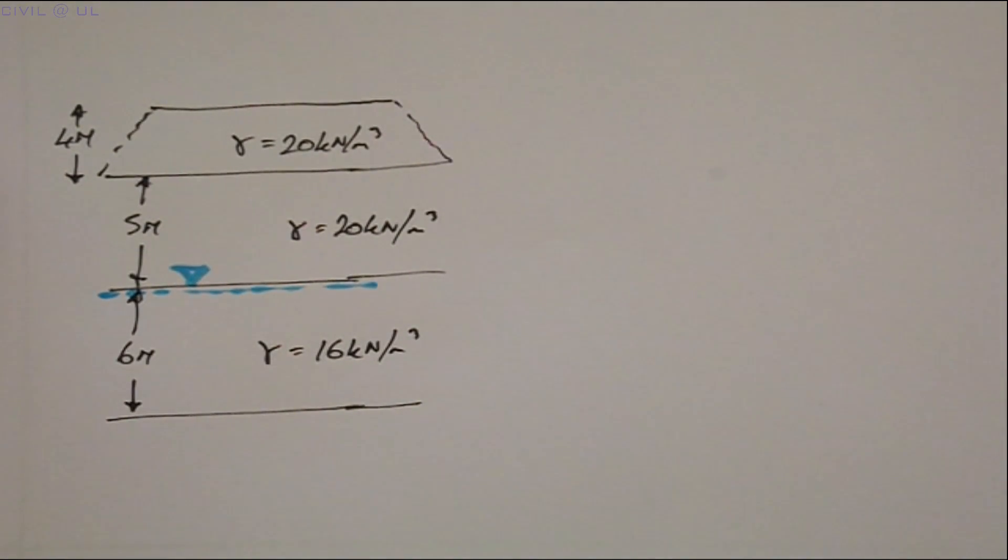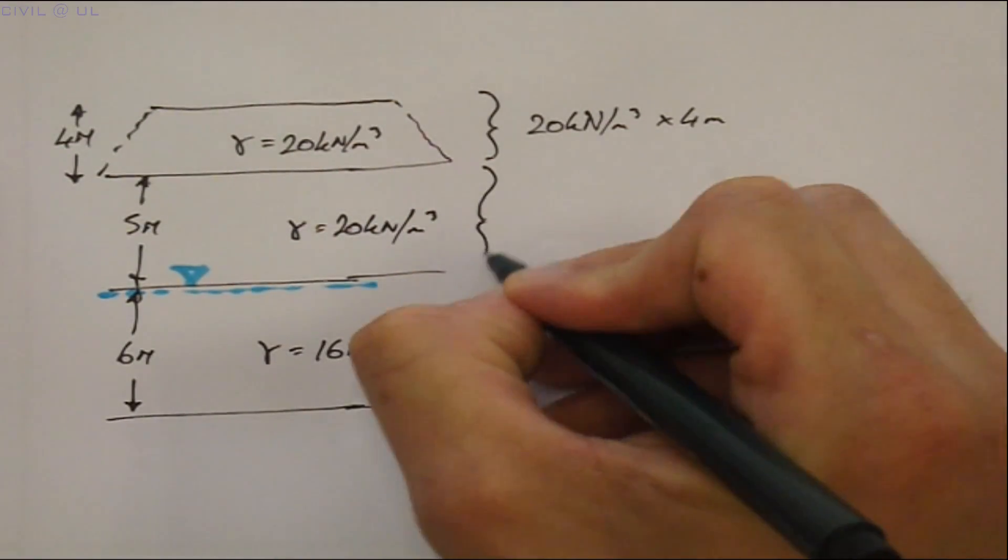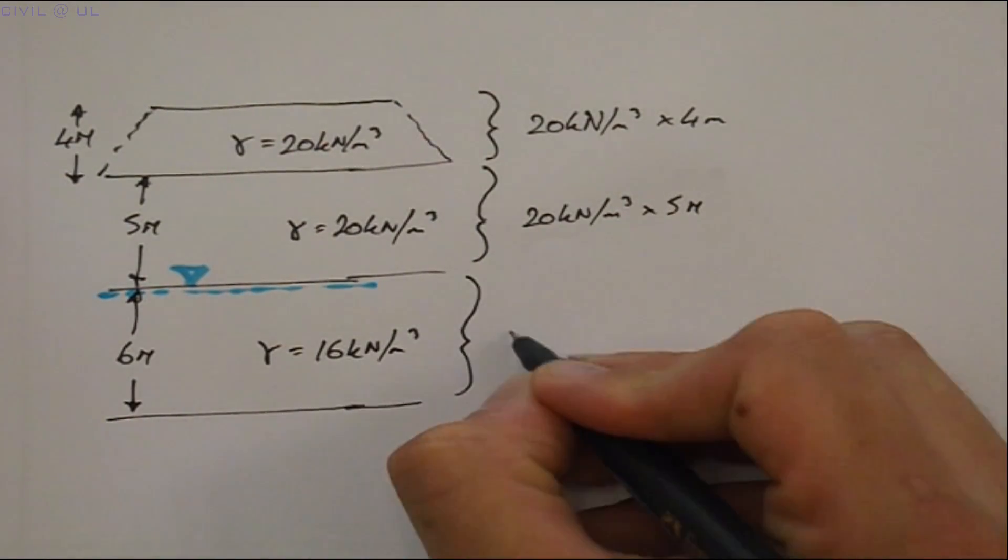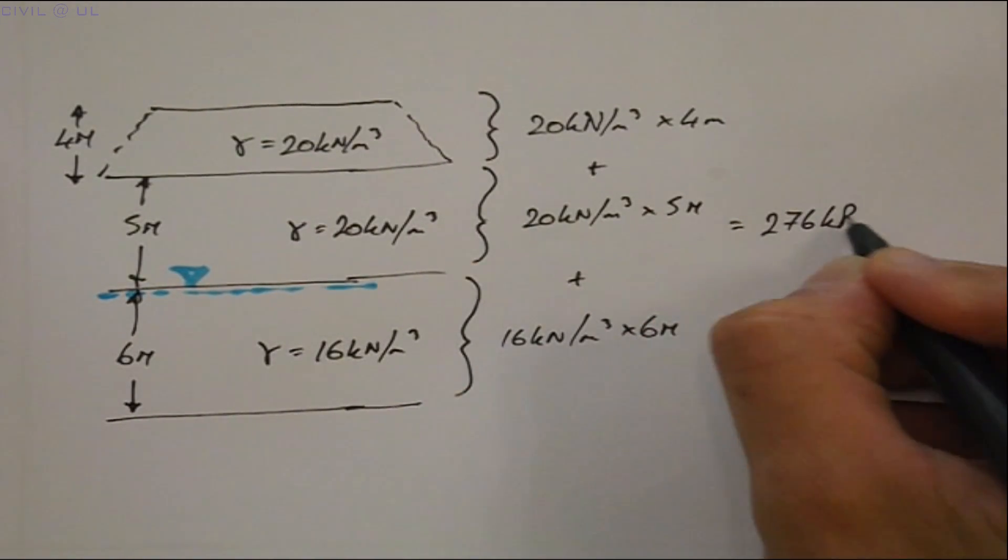So our total stress now becomes 20 multiplied by 4 the embankment plus 20 multiplied by 5 strata 1 plus 16 multiplied by 6 strata 2 giving a total of 276 kPa.